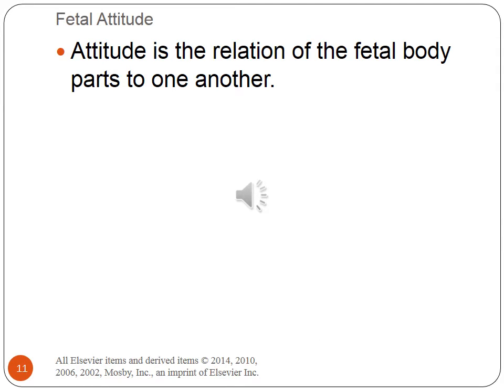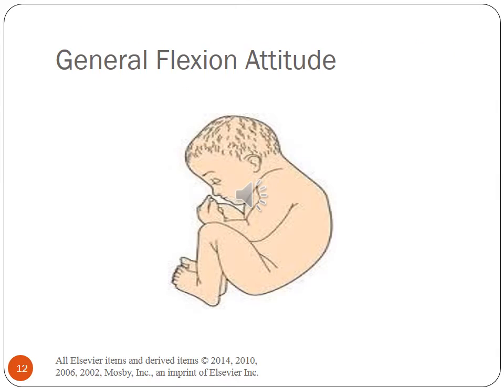Let's discuss fetal attitude. Attitude is the relationship of the fetal body parts to one another. The fetus assumes a posture in utero shaped to the uterine cavity. The fetus is usually rounded with the chin flexed to the chest, thighs flexed to the abdomen, and the legs flexed at the knees. Arms are normally flexed across the thorax — this attitude is called general flexion. The umbilical cord lies between the arms and legs. Deviation from normal attitude may cause a difficult birth. Look at page 344 in your text.